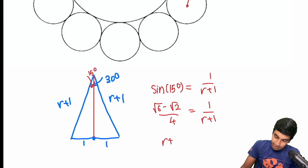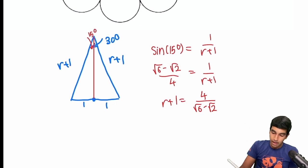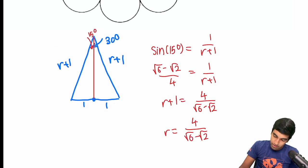And now we just expand. This is pretty straightforward. r plus 1 equals 4 over root 6 minus root 2. And then r equals 4 over root 6 minus root 2 minus 1.